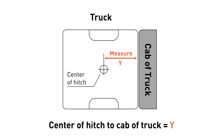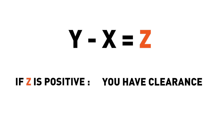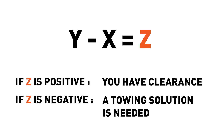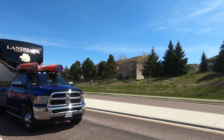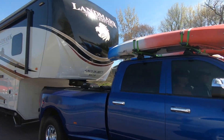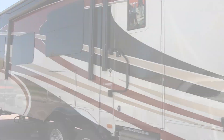Step 3: Use this formula — Y minus X equals Z. If Z is positive, you have enough clearance to tow your trailer. If Z is zero or negative, you are in need of a towing solution for additional clearance. The calculated number will tell you how much additional clearance is needed and help you decide what is the best towing solution.